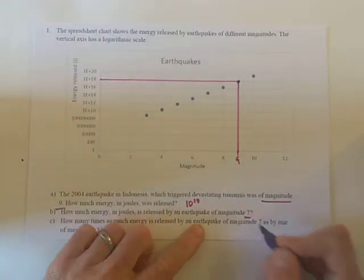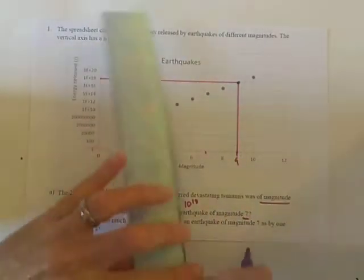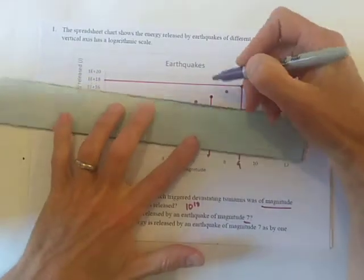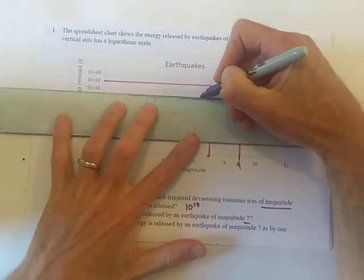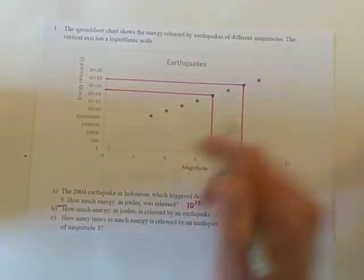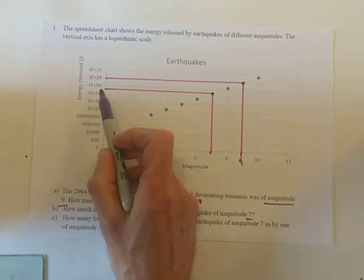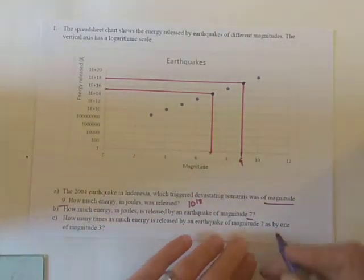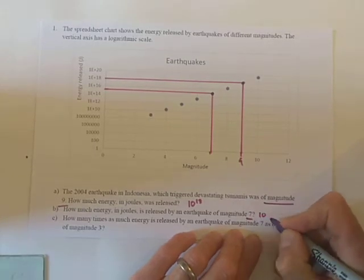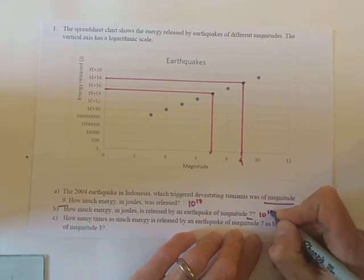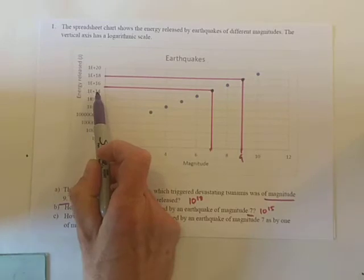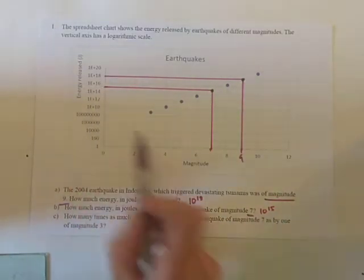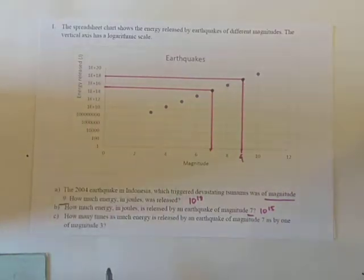For the second part, when it's magnitude 7, that comes out halfway between 10 to the power of 14 and 10 to the power of 16. It is a logarithmic scale, but halfway between those is just 10 to the power of 15, because if we multiply 10 to the power of 14 by 10 we get 10 to the power of 15, and multiplied by 10 again we get 10 to the power of 16.